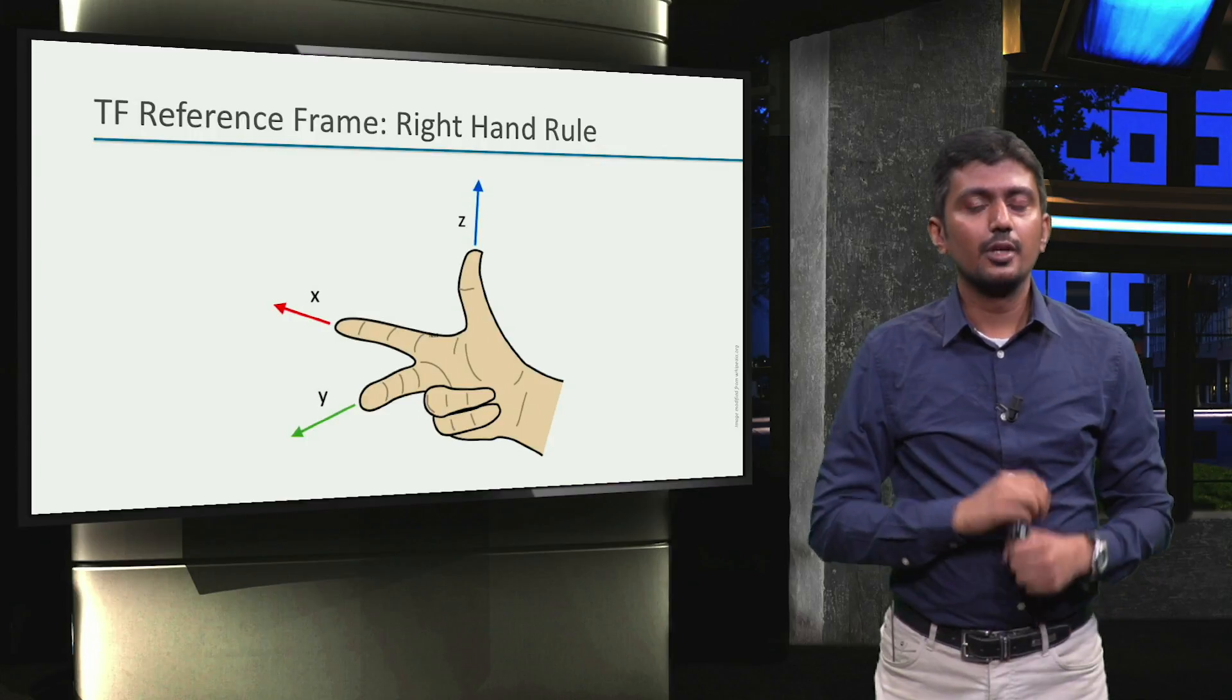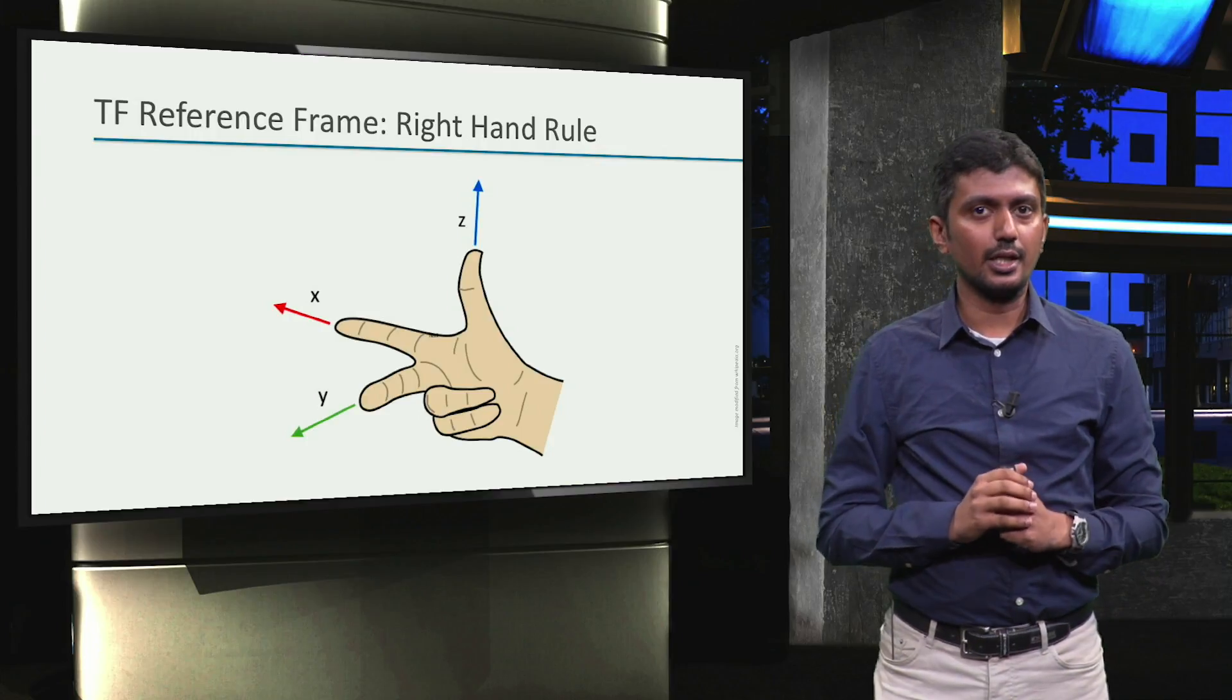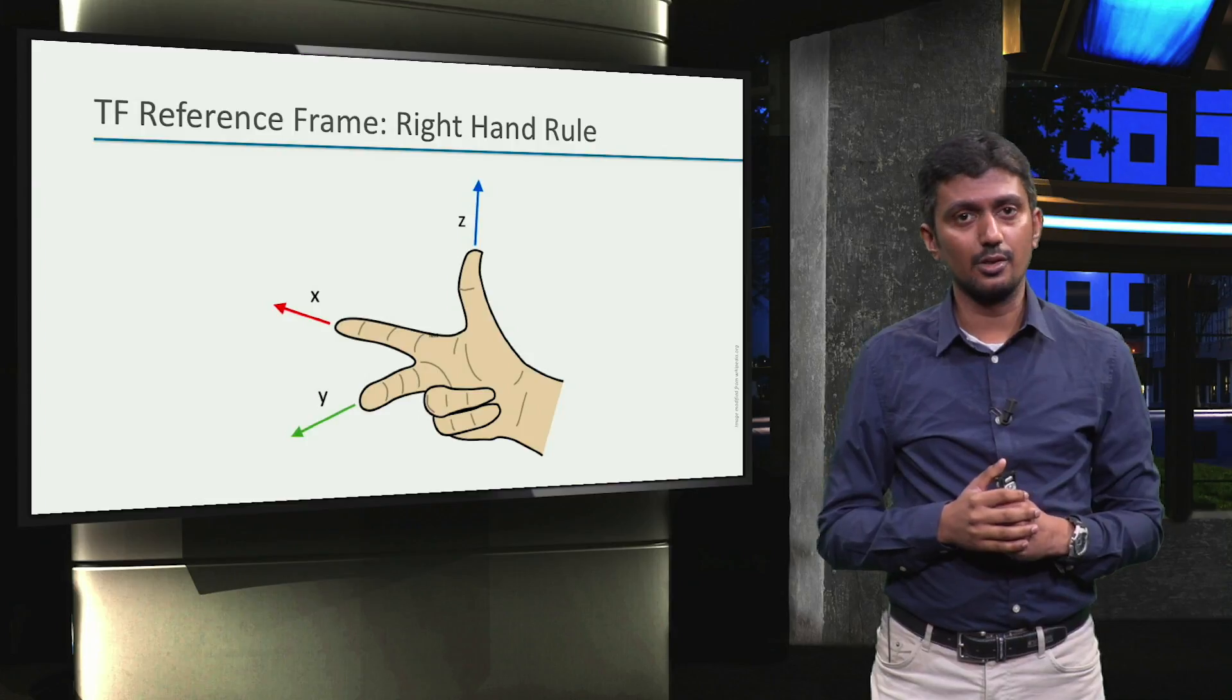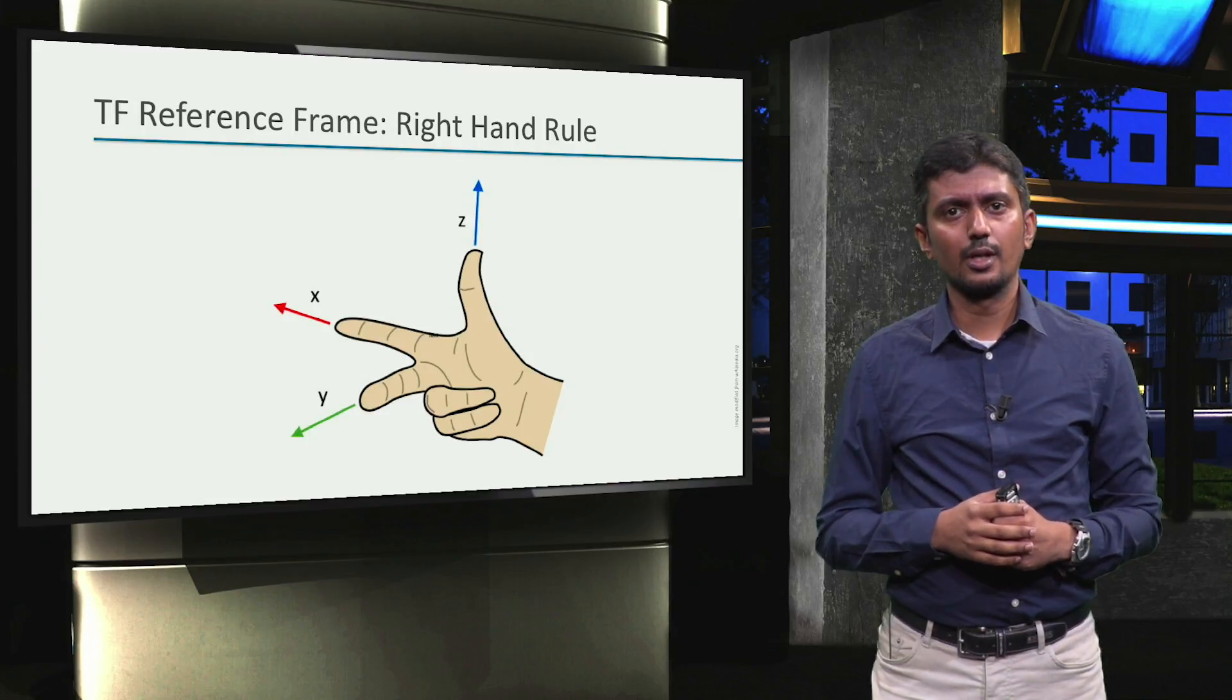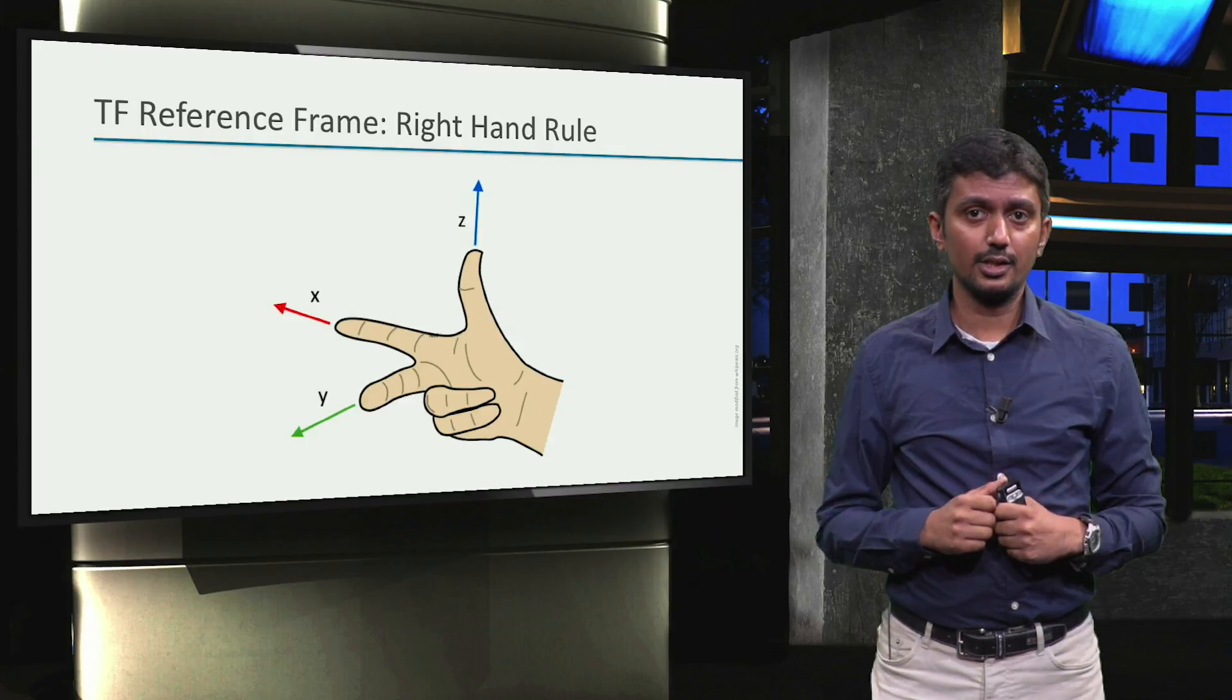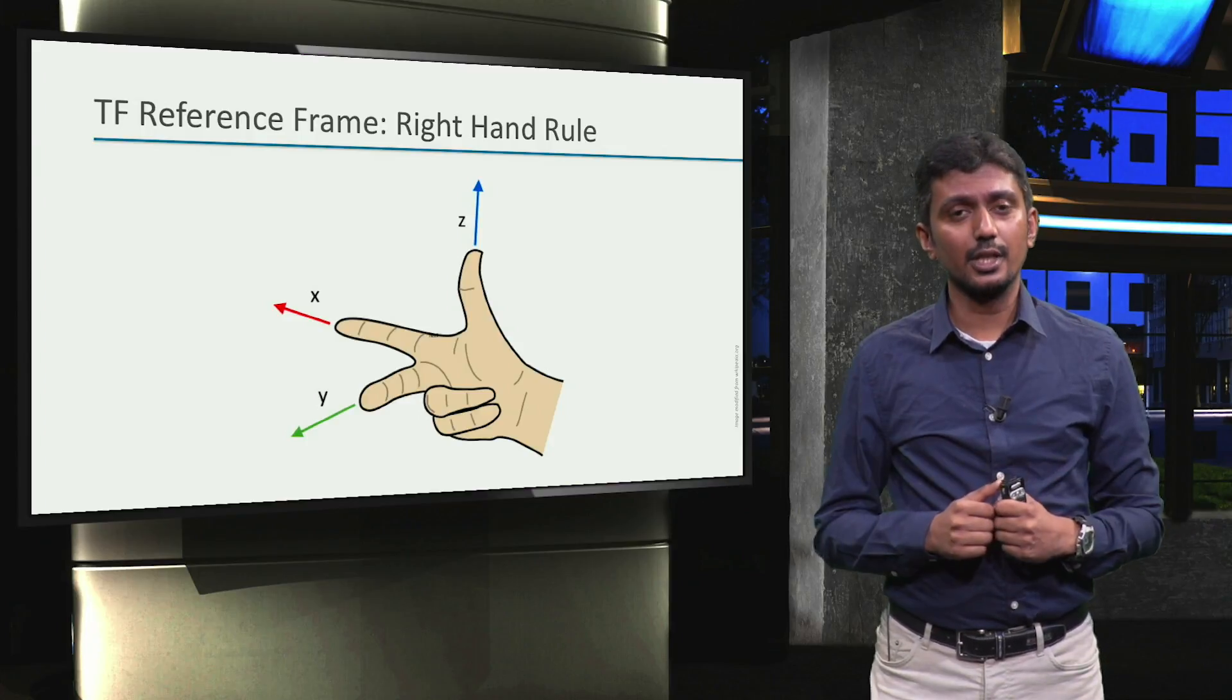We are now aware of the main idea behind TF and the convention used to define reference frames in ROS. But how are they generated in ROS? Where are they located once they are generated? Let's find out in the next video.